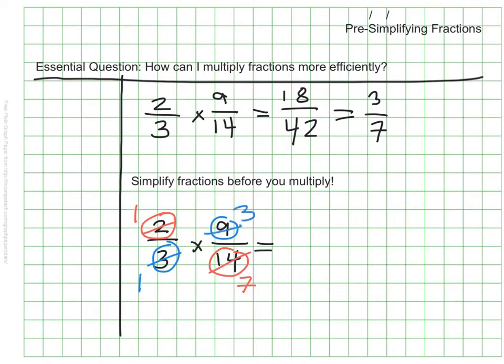Now that I have things simplified I'll go ahead and do my normal multiplication process. My numerator times numerator. 1 times 3 is 3. 1 times 7 is 7. There's my complete answer which is the same that we got the first time, 3/7ths.